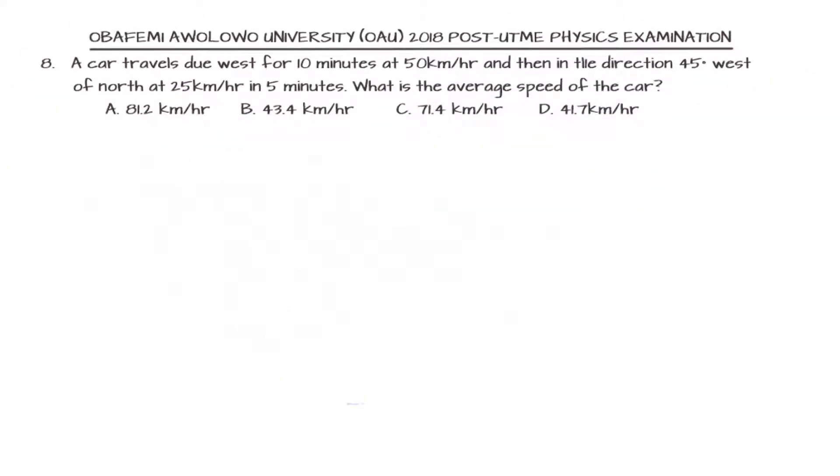In this question we are told that a car travels due west for 10 minutes at 50 kilometers per hour, and then in the direction 45 degrees west of north at 25 kilometers per hour for 5 minutes. We are to find the average speed. Looking at the options, we can see we are giving our options in kilometers per hour, so we need to be careful.